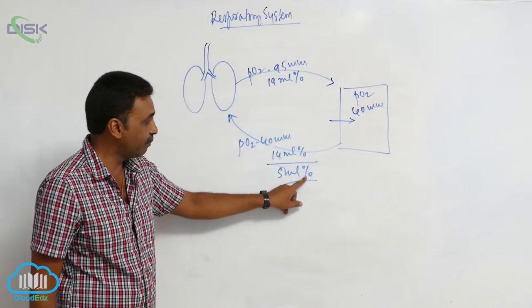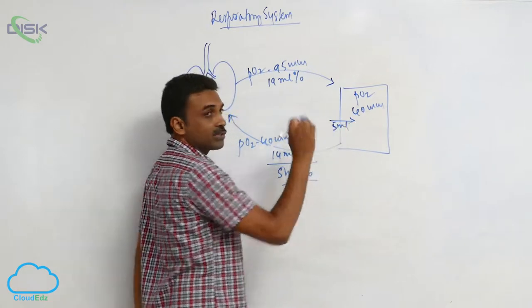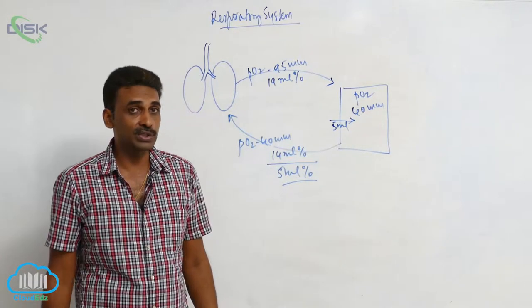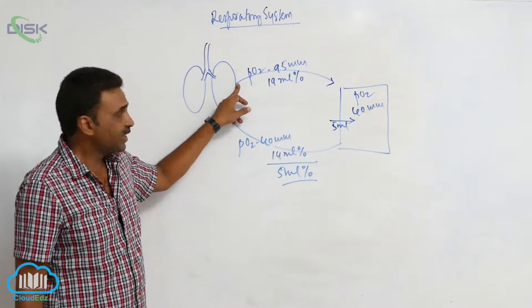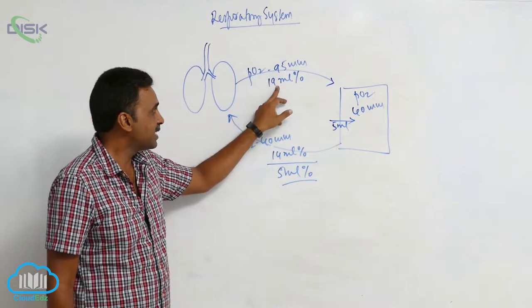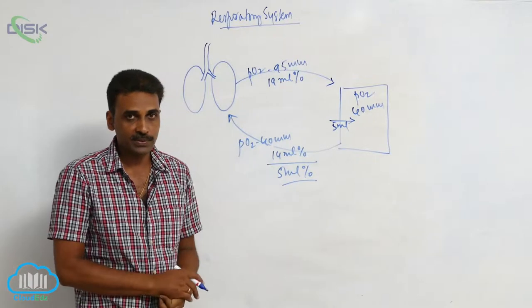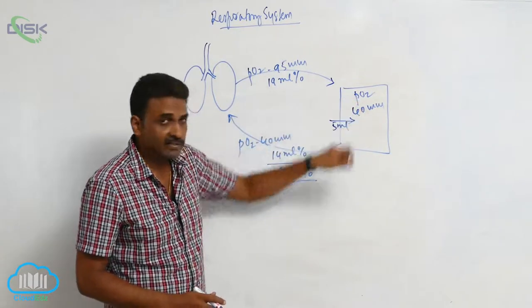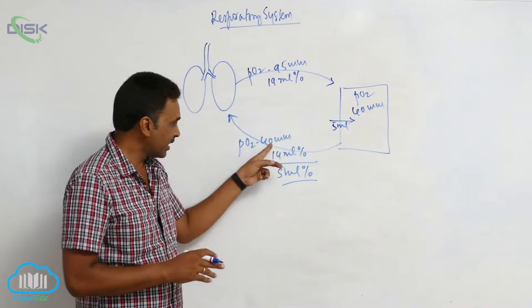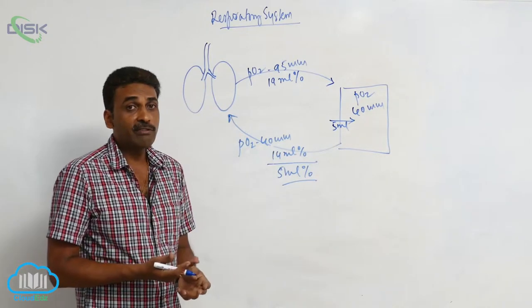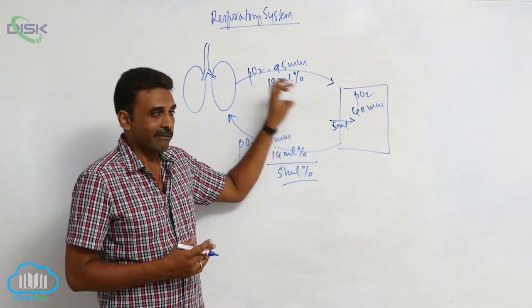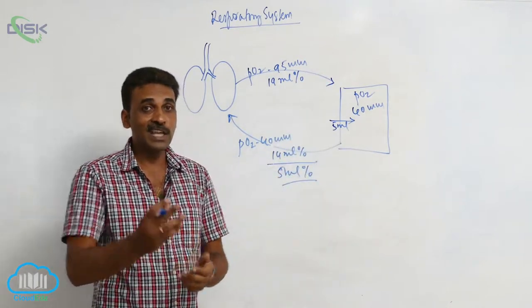That means for every 100 ml of blood coming to the tissues, 5 ml of oxygen is delivered to the tissues. In the arterial blood, when the partial pressure of oxygen is 95 millimeters of mercury, for every 100 ml of blood there is 19 ml coming towards the tissues. After exchange of gases, when the blood is leaving the tissues — the venous blood — the partial pressure of oxygen is 40, and under that partial pressure there is only 14 ml of oxygen per 100 ml of blood. The difference is 5 ml, meaning 5 ml of oxygen is delivered to the tissues.